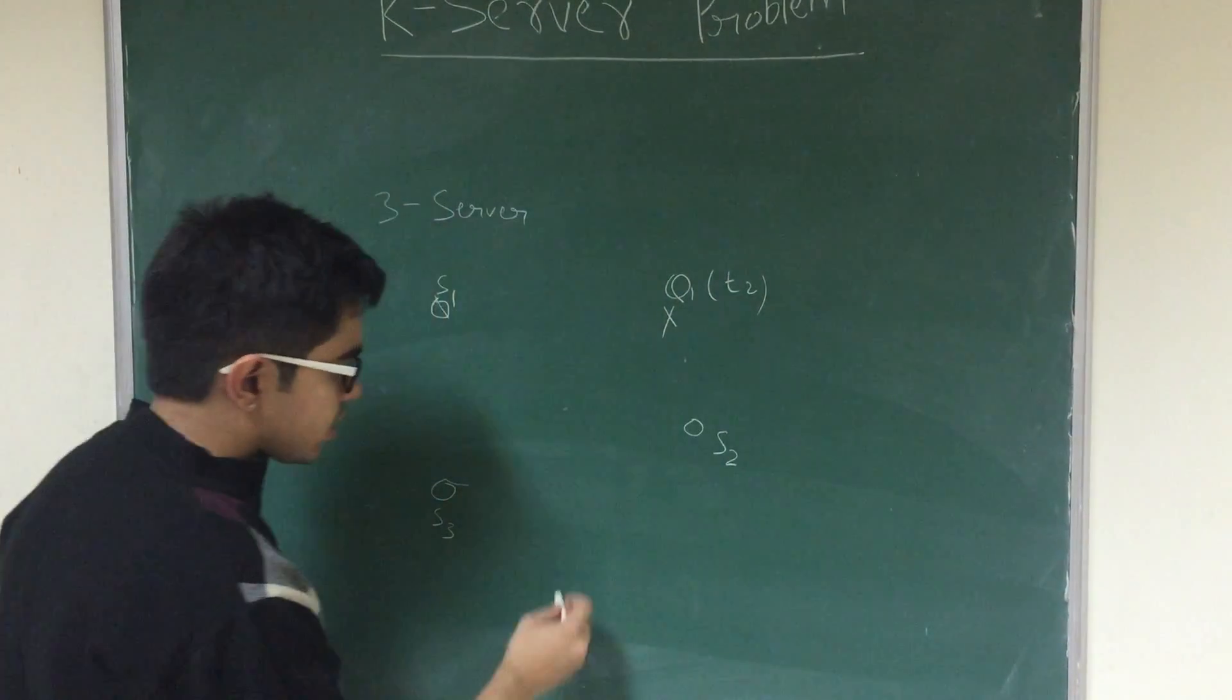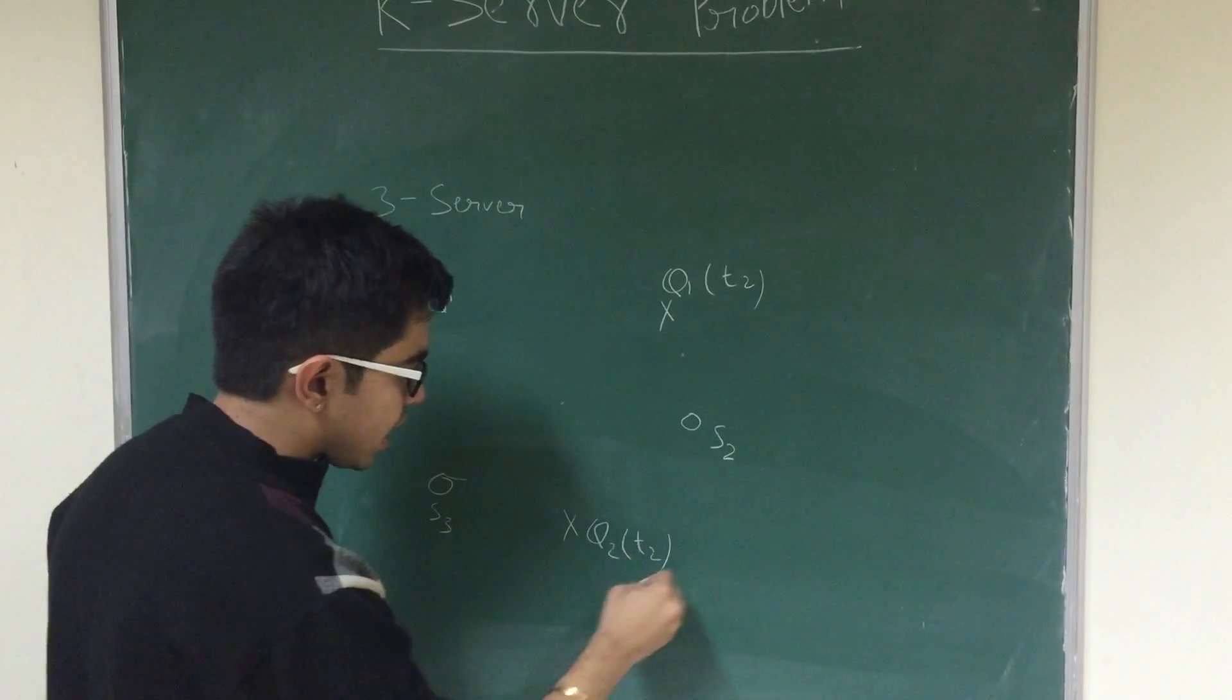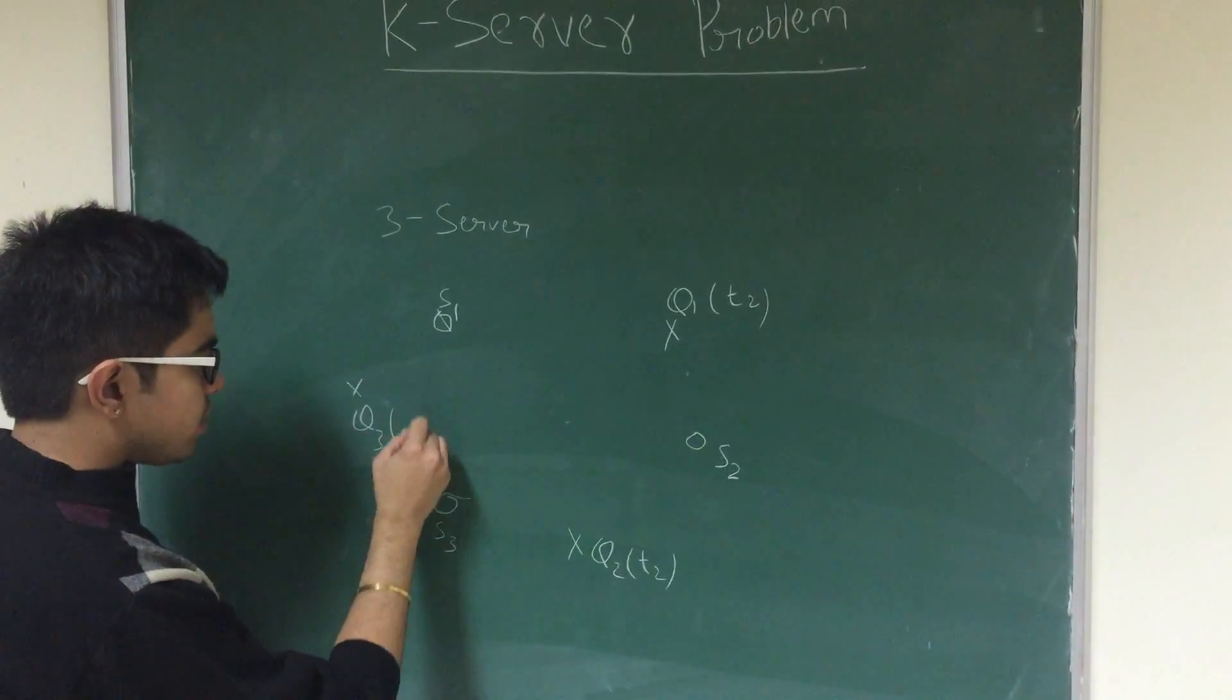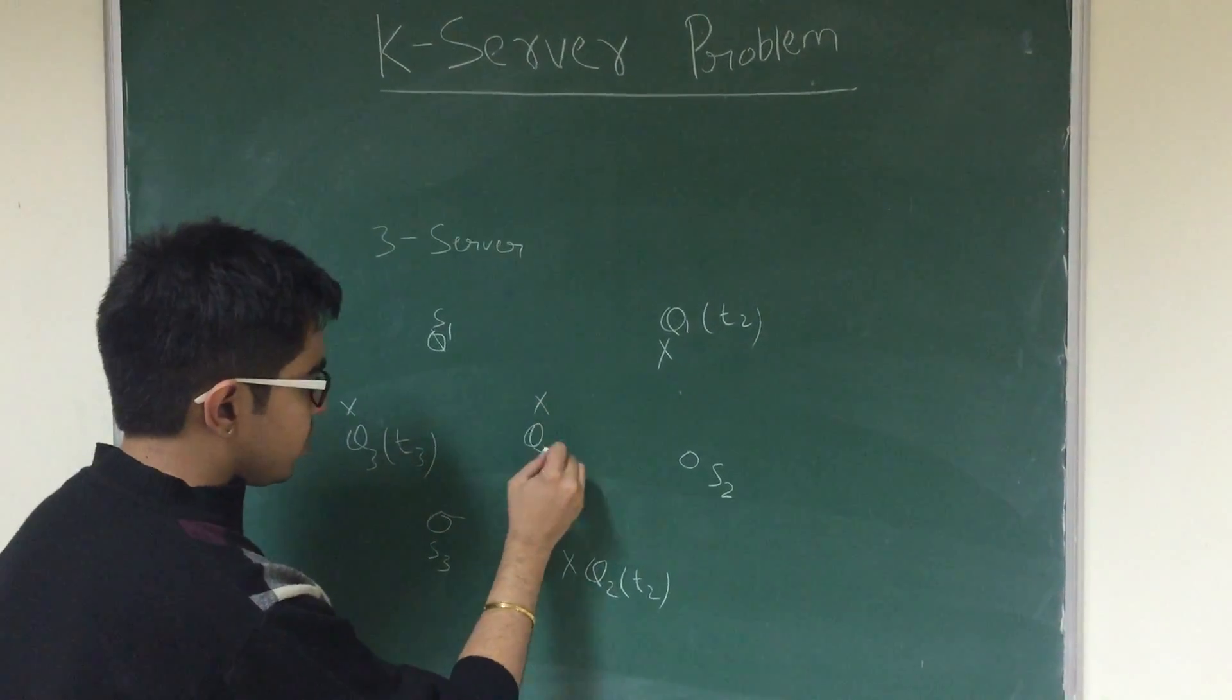And let's say a request that arrives somewhere here at time q2, at time t2. And another request, let's say q3 at time t3. And let's say one more, q4 at time t4.